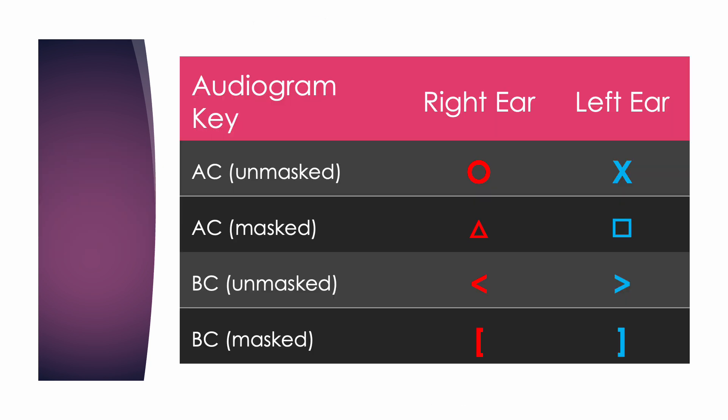Next, we'll discuss these symbols. The circles, x's, triangles, and squares are symbols used to represent air conduction — how we hear with our ears attached to our heads. That sound has to travel through the ear canal, eardrum, bones, and into the inner ear. The greater-than and less-than symbols and brackets represent bone conduction, where sound uses vibrations against the skull to travel straight to the inner ear. If an audiogram is displayed in color, the right ear is always documented in red ink, and the left ear is always documented in blue ink.